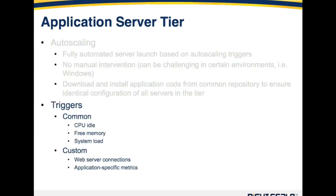Some common autoscaling triggers include CPU idle, free memory, and system load — these are provided right out of the box with the majority of RightScale server templates. CPU idle works as you might expect: an instance can say it's not very idle and needs help, launching additional servers. Or if the CPU idle percentage goes up, the server can vote to say it can handle more of the load, so you can take away some additional infrastructure.